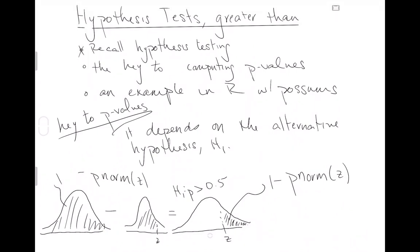If all the area under the curve equals 1, and we subtract off all the area to the left of z, we get all the area to the right — which we're interested in, because the alternative hypothesis here is greater than. That's the key. Calculating p-values depends on the alternative hypothesis. In this video we focus on an alternative with greater than, so we want area to the right. Since pnorm calculates area to the left, we do 1 minus pnorm to get all the area to the right. We'll use that trick in an example in R.